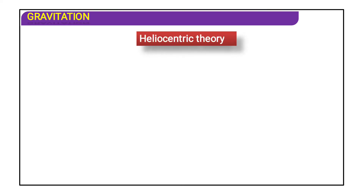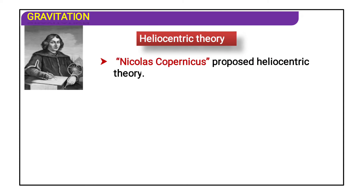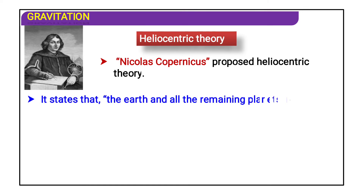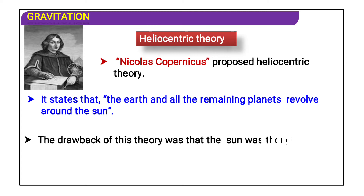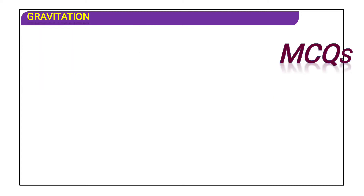Nicolas Copernicus proposed the heliocentric theory, which states that the earth and all remaining planets revolve around the sun. The drawback of this theory was that the sun was thought to be at a fixed position in the center.